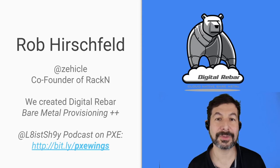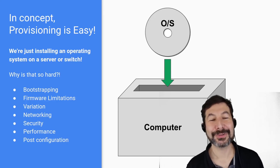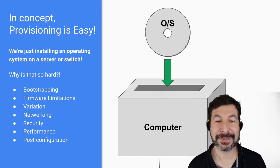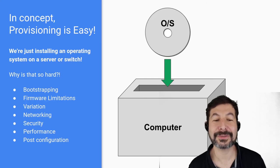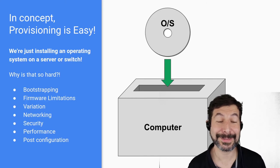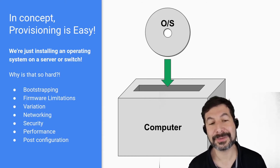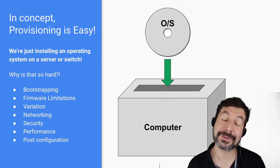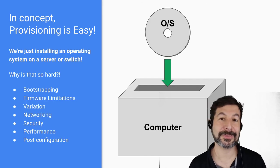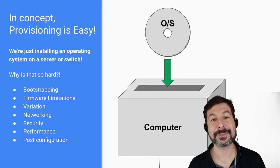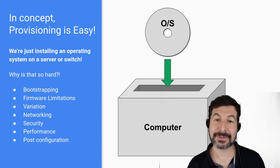In concept, provisioning is super, super easy — all we're trying to do is put an operating system onto a computer, whether it's a switch or a server. While it's conceptually easy, it's actually really, really hard because we have to deal with bootstrapping, which is literally starting a system up from nothing. The first parts of this process are going to be fragile. Customers at Racken are dealing with different types of servers, different vendors, different protocols — some using old legacy BIOS, some using UEFI, some using Redfish. It is crazy heterogeneous, and that's what makes it hard.